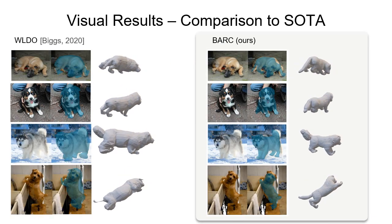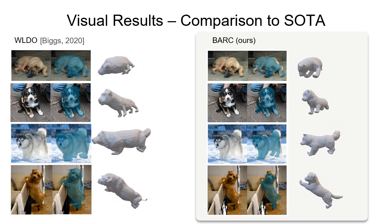Next, we show Waldo results on the left. Bark on the right produces much more realistic 3D shapes.